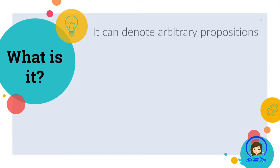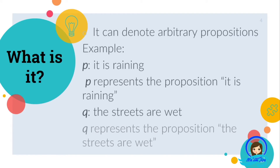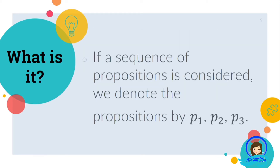A propositional variable can also denote arbitrary propositions. For example, the proposition P: it is raining. P here represents the proposition 'it is raining.' And then we have the proposition Q: the streets are wet. Q here represents 'the streets are wet.' If a sequence of propositions is considered, we denote them by P1, P2, P3, and so on.